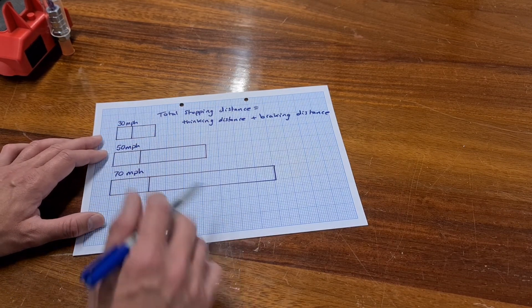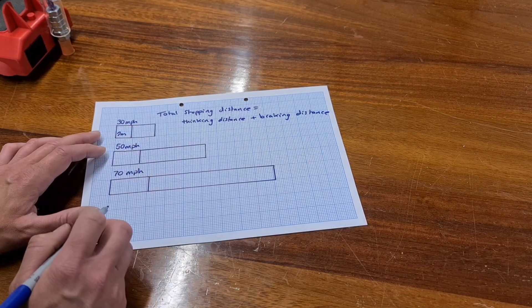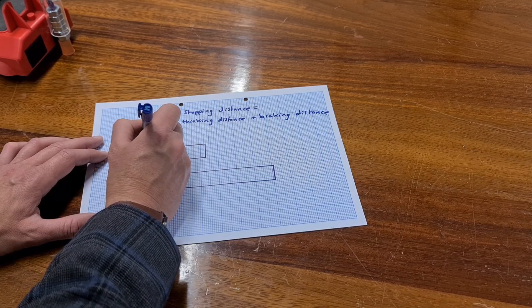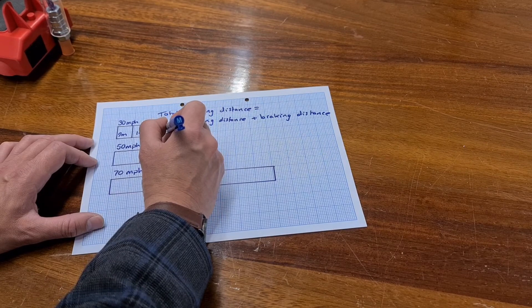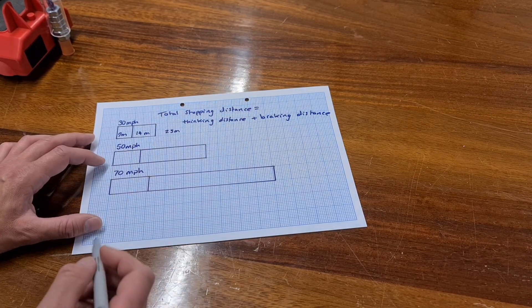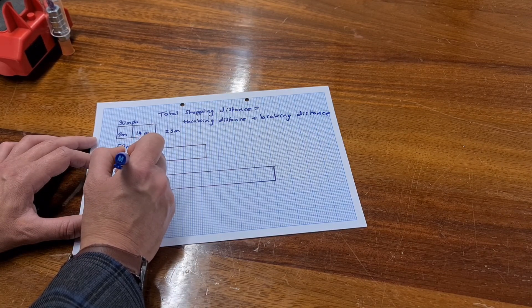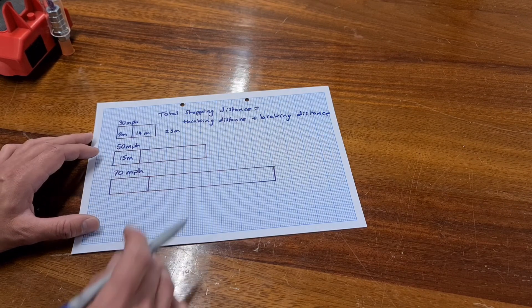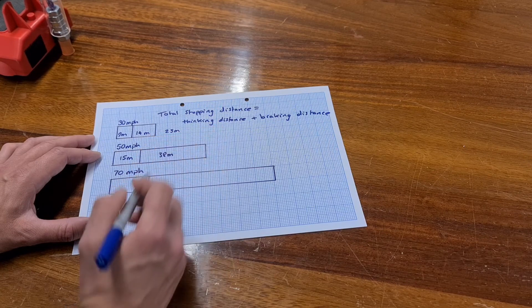Here at 30 miles an hour it takes 9 meters before the person engages the brakes and a further 14 meters after that to stop the car. So the total stopping distance is 23 meters. At 50 miles an hour it is 15 meters are passed through before the brakes are applied. And then a further 38 meters whilst the car is braking.